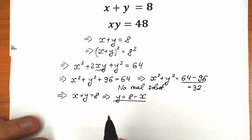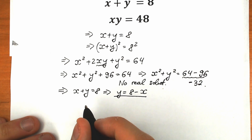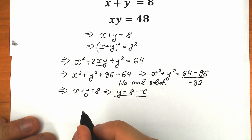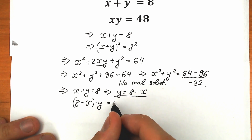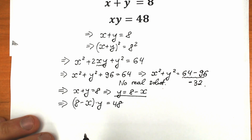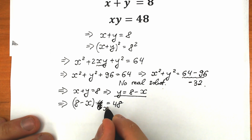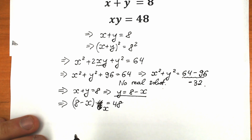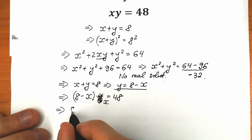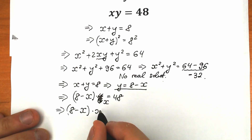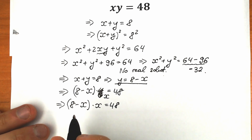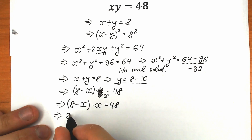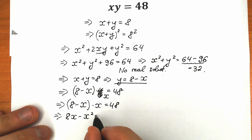We're going to plug this value of y into the second equation. So we have (8 minus x) times x equals 48. This is a quadratic equation. When we multiply everything out, we get 8x minus x squared equals 48.